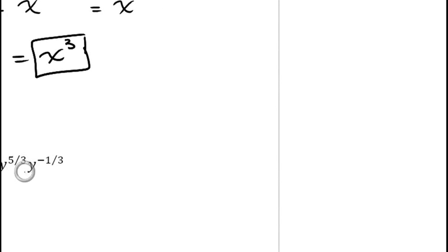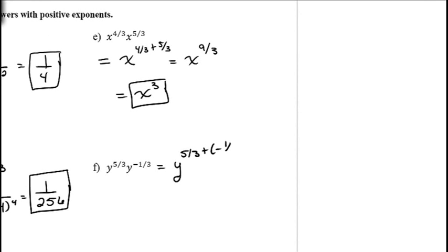For y to the 5/3 times y to the negative 1/3: add exponents — 5/3 plus negative 1/3 equals 4/3. The result is y to the 4/3, which cannot be simplified further.